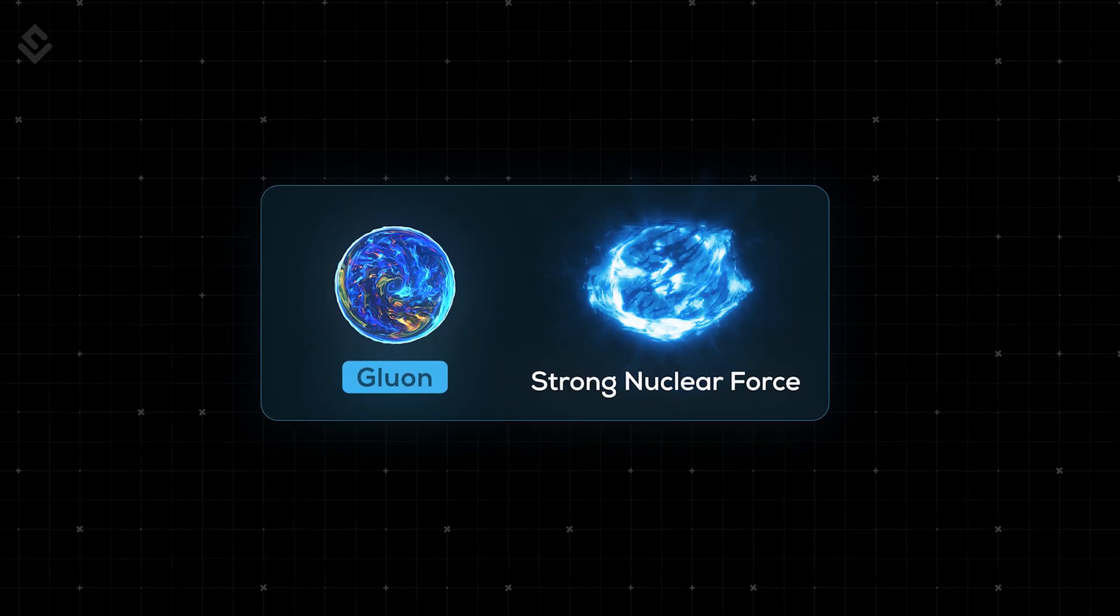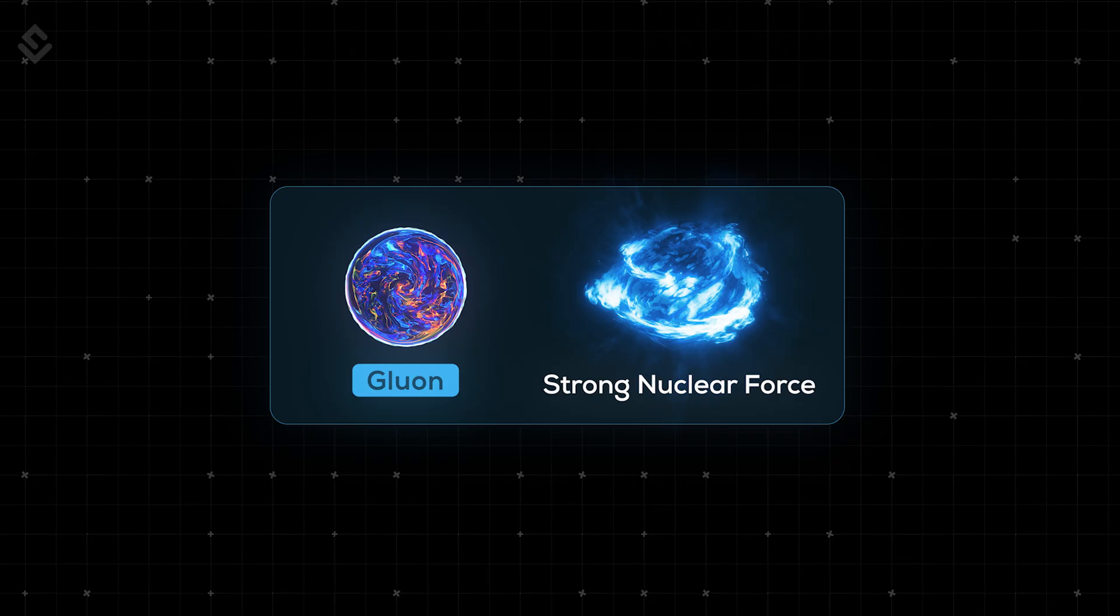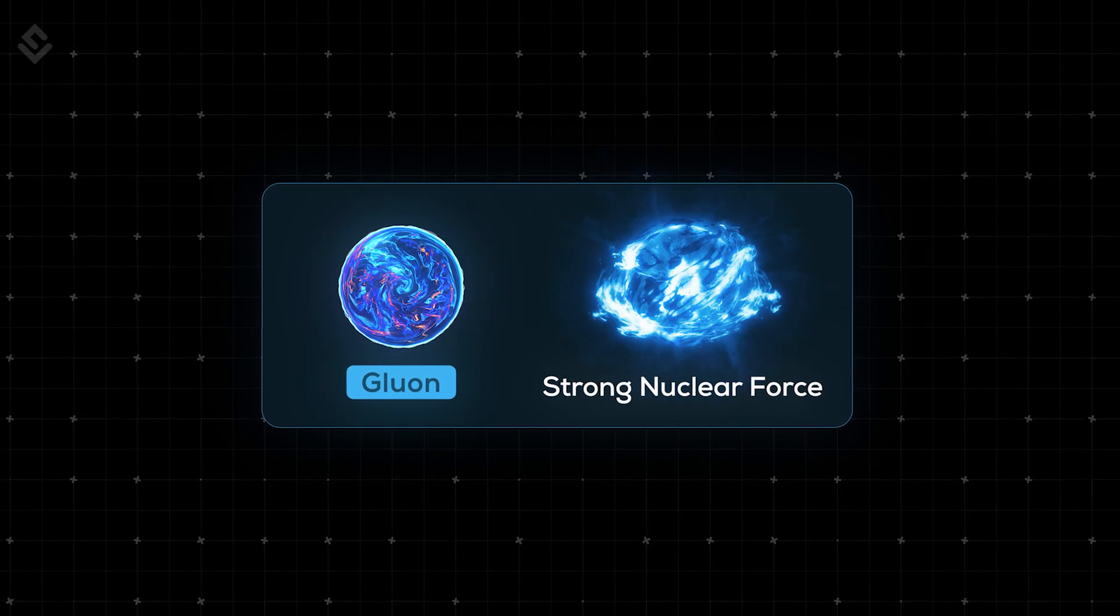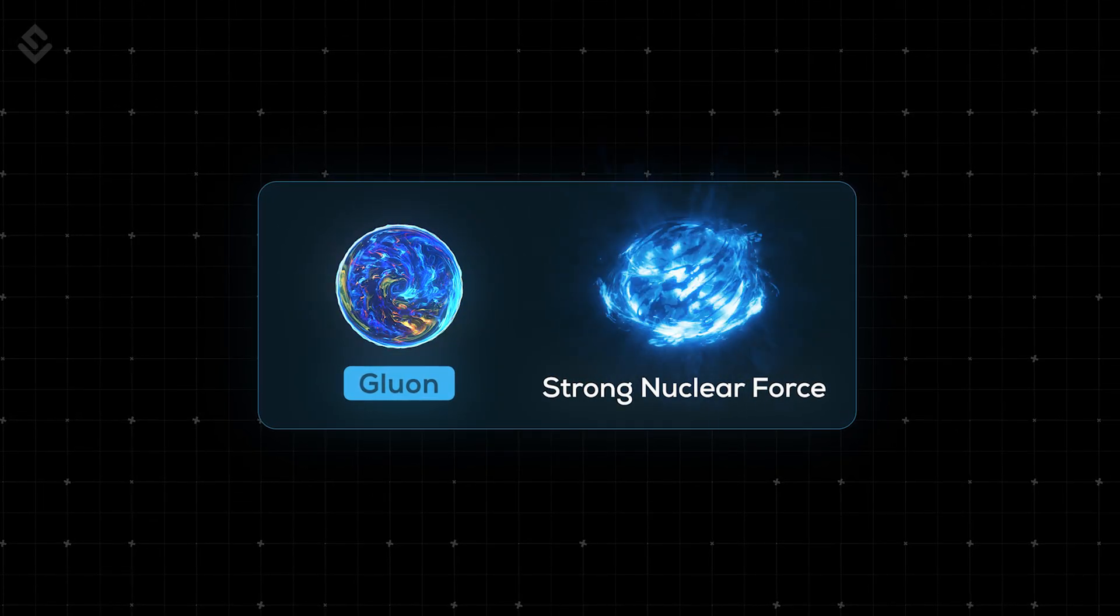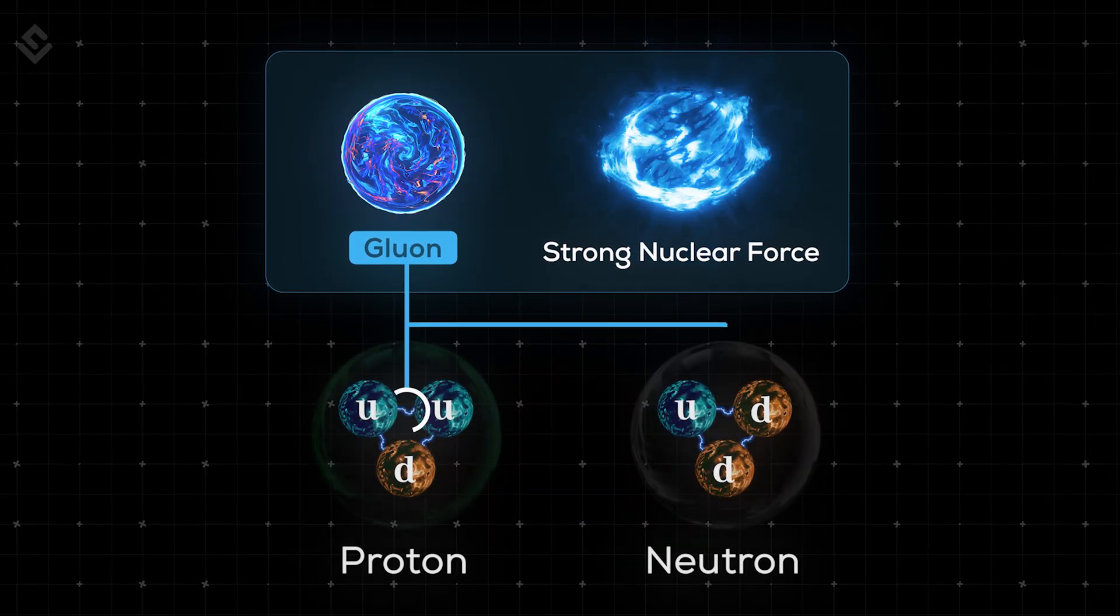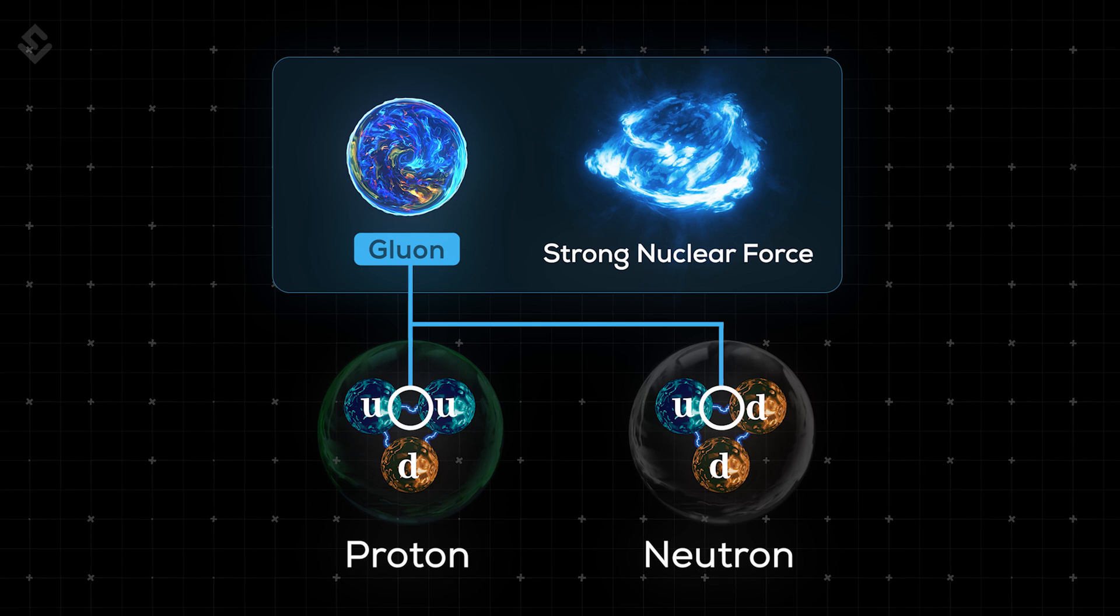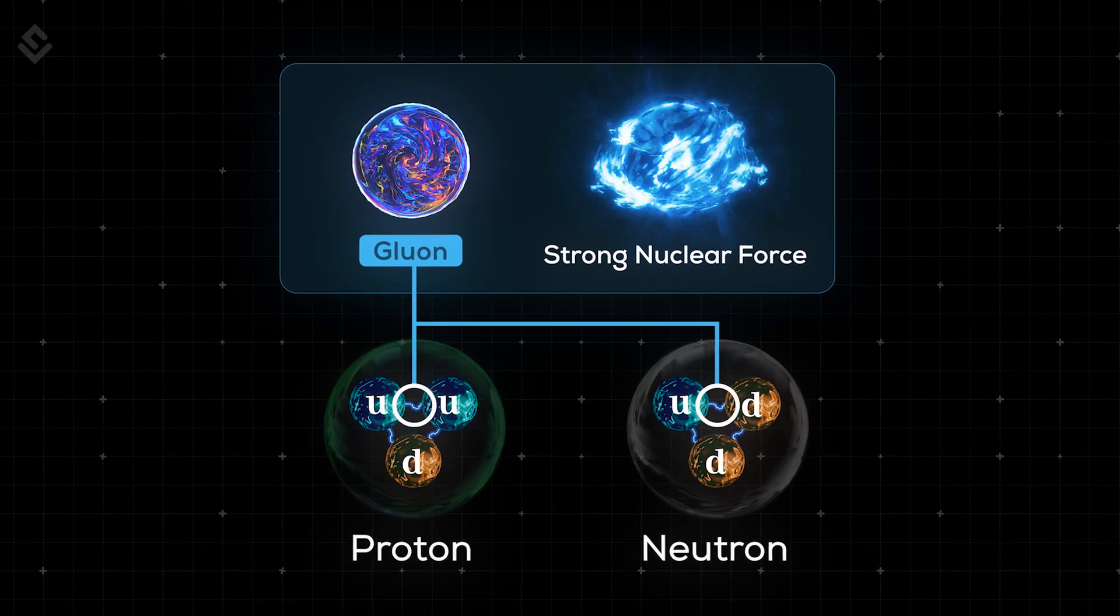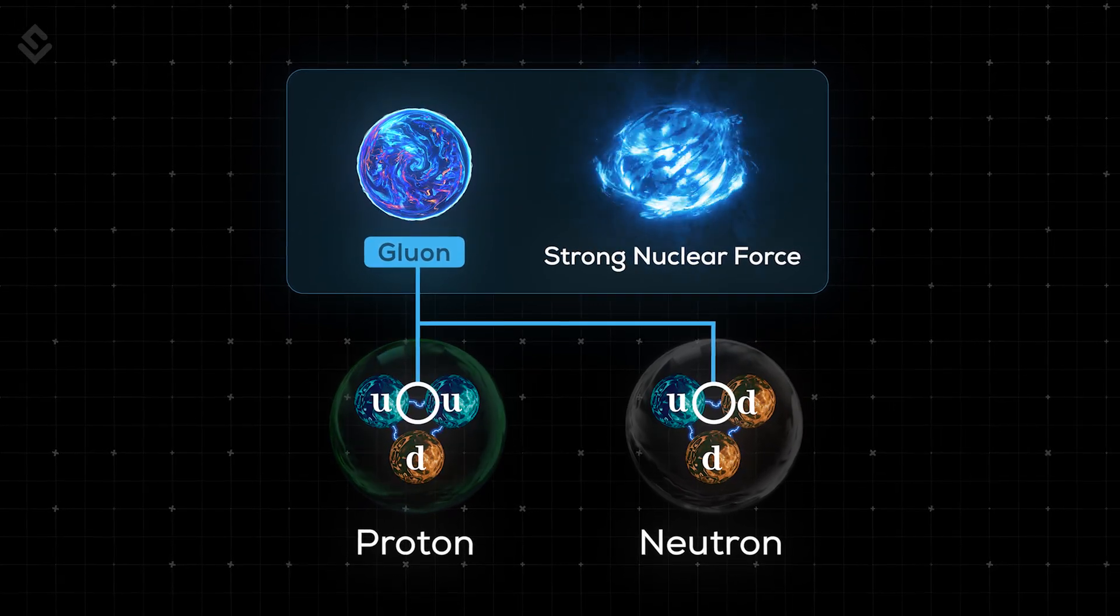And now this strong nuclear force that holds the protons and neutrons together in the nucleus and is carried by particles known as gluons. Without gluons, atomic nuclei won't exist. Gluons are the glue that holds the quarks in the protons and neutrons together and are considered in the framework of quantum chromodynamics.